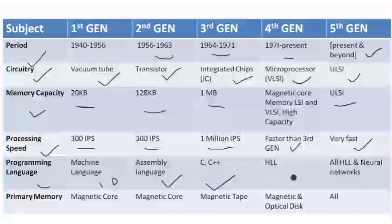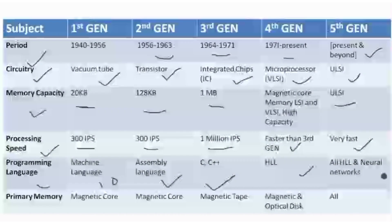In the fourth generation we used high-level languages — all high-level languages such as Java, C, and so on were used. In the fifth generation, along with high-level languages, we also started using neural networks.